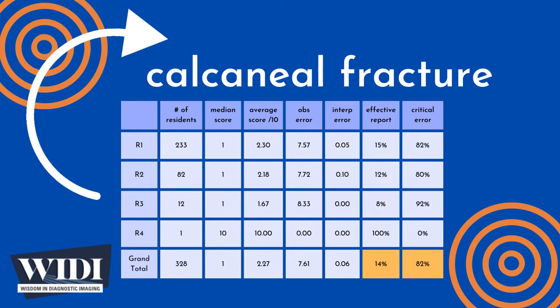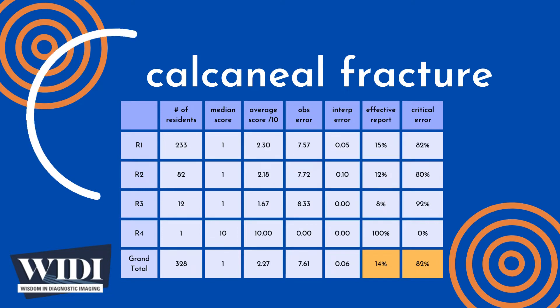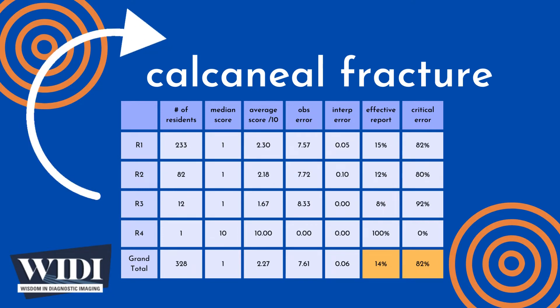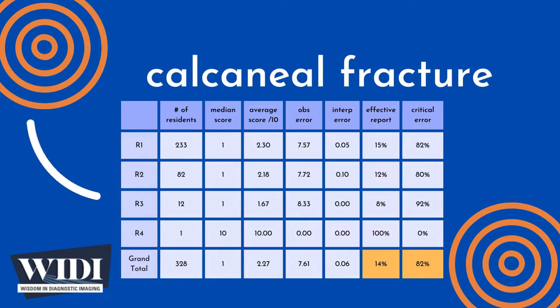We define a report having a critical error to be one with scores between 0 and 2. In terms of letter grades, this would be F and D. In this most missed case, 82% of residents produced reports with critical errors.